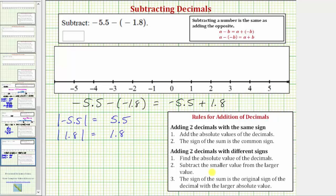Step two, we subtract the smaller value from the larger value. So we subtract 1.8 from 5.5. So we have 5.5 minus 1.8.